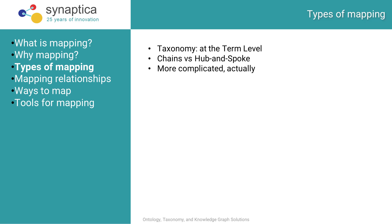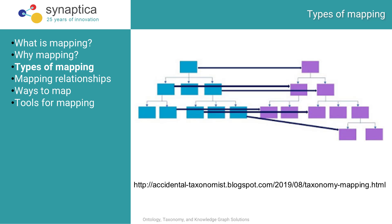I borrowed this image from Heather Hedden's blog post on taxonomy mapping to show that even mapping between two simple hierarchies will expose problems — one-to-many relationships in both directions and unmapped nodes, for example.